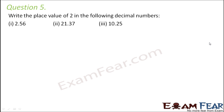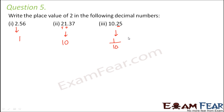Question number 5: write the place value of 2 in the following decimal numbers. For 2.56, the 2 is located at the ones place, so the place value of 2 is 1. In the next number, 2 is located at the tens place, so the place value is 10. In another case, the 2 is located after the decimal at the tenths place, so the place value is 1/10.